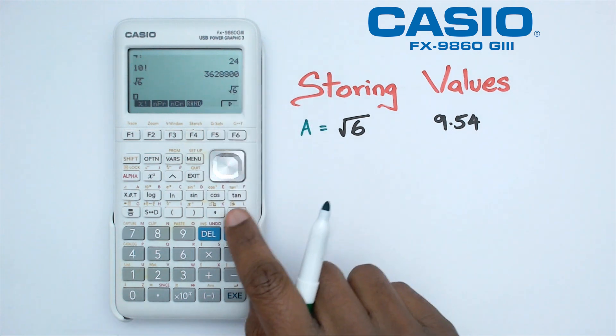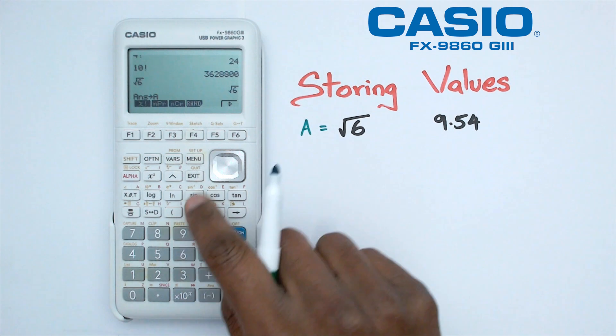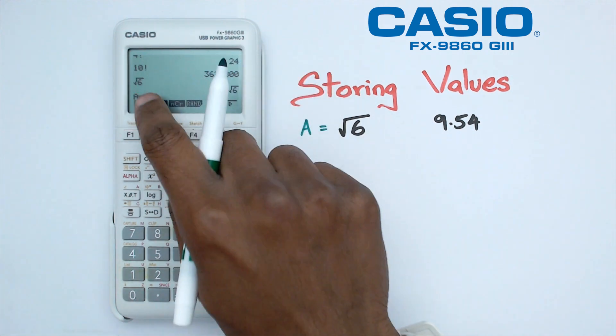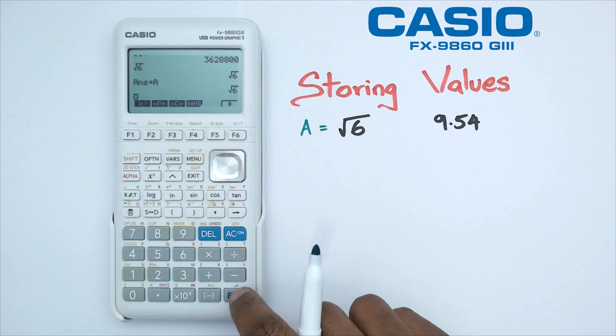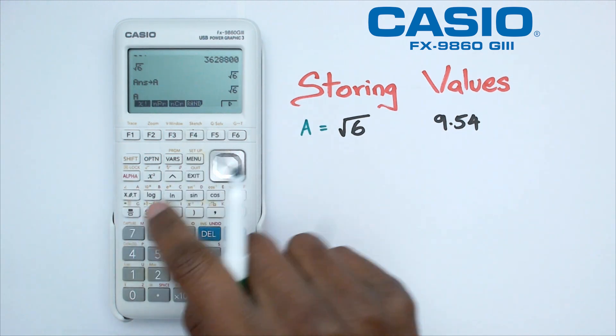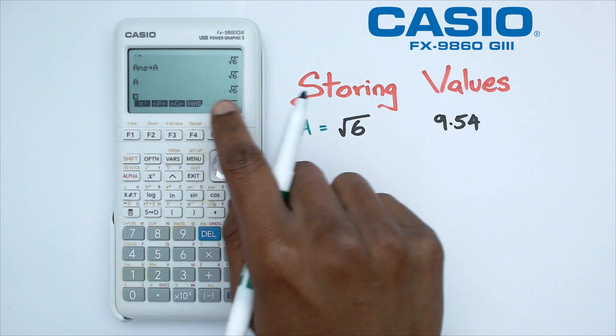I could click on this little particular arrow and I click on alpha A. Basically what that's doing is it's actually taking square root of six and it's storing it as the letter A. So that means anytime I do alpha A and if I just put that as equals, it's going to end up being square root of six.